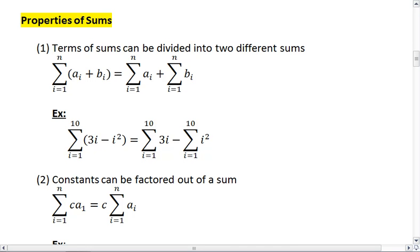Now we need to look at the properties of sums. Terms of sums can be divided into two different sums. This is our first property, and this is telling us that if I have two terms being added together, I can divide this into two different summations.